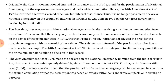Originally, the constitution mentioned internal disturbance as the third ground for proclamation of national emergency. But the expression was too vague and had a wider connotation. Hence, the 44th Amendment Act of 1978 substituted the words 'armed rebellion' for 'internal disturbance'. Thus it is no longer possible to declare a national emergency on the ground of internal disturbances as was done in 1975 by the Congress government headed by Indira Gandhi.